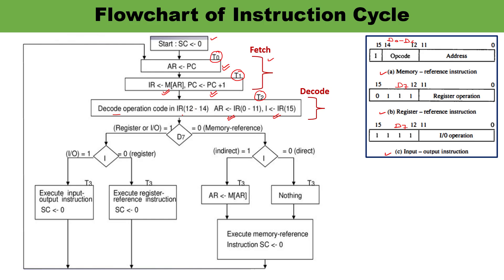From the decoded opcode, a decision is taken. When the D7 bit is 1, it corresponds to either register reference or input-output instruction. When the D7 bit is 0, it means the opcode is D0 through D6, which corresponds to memory reference instructions.